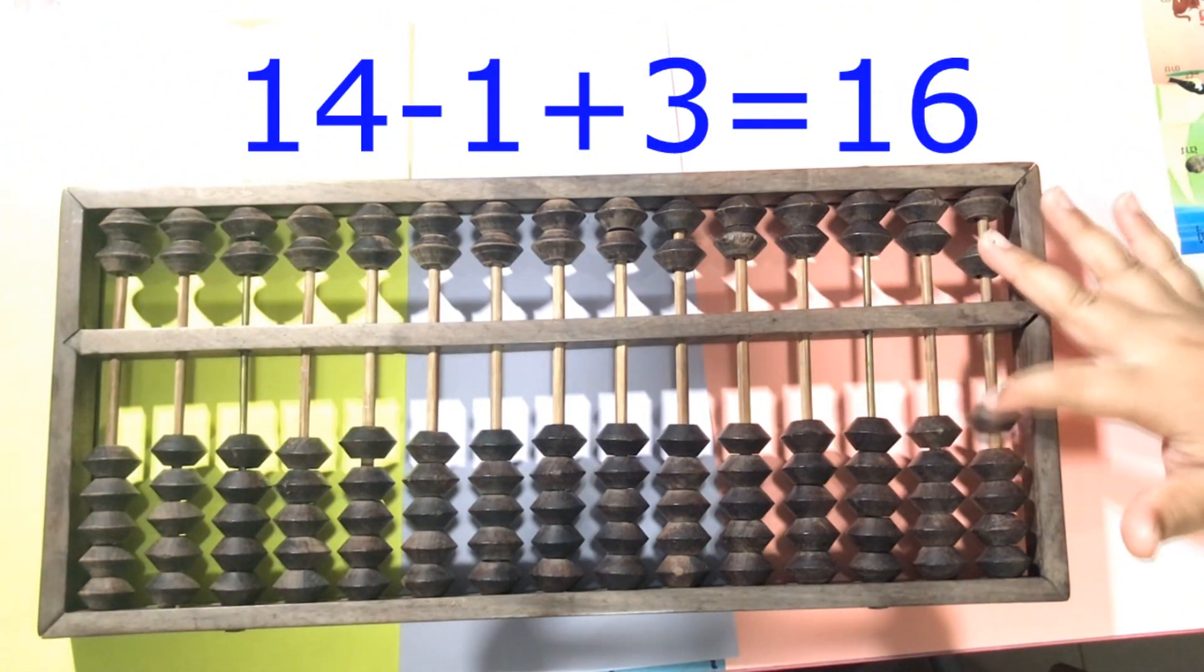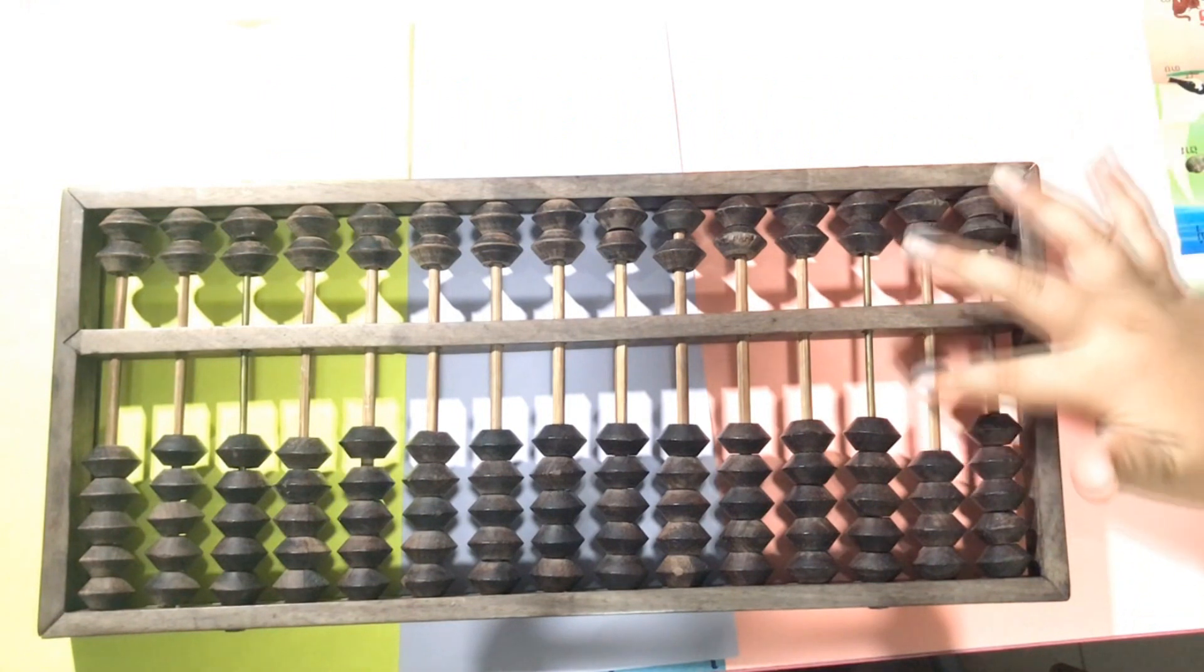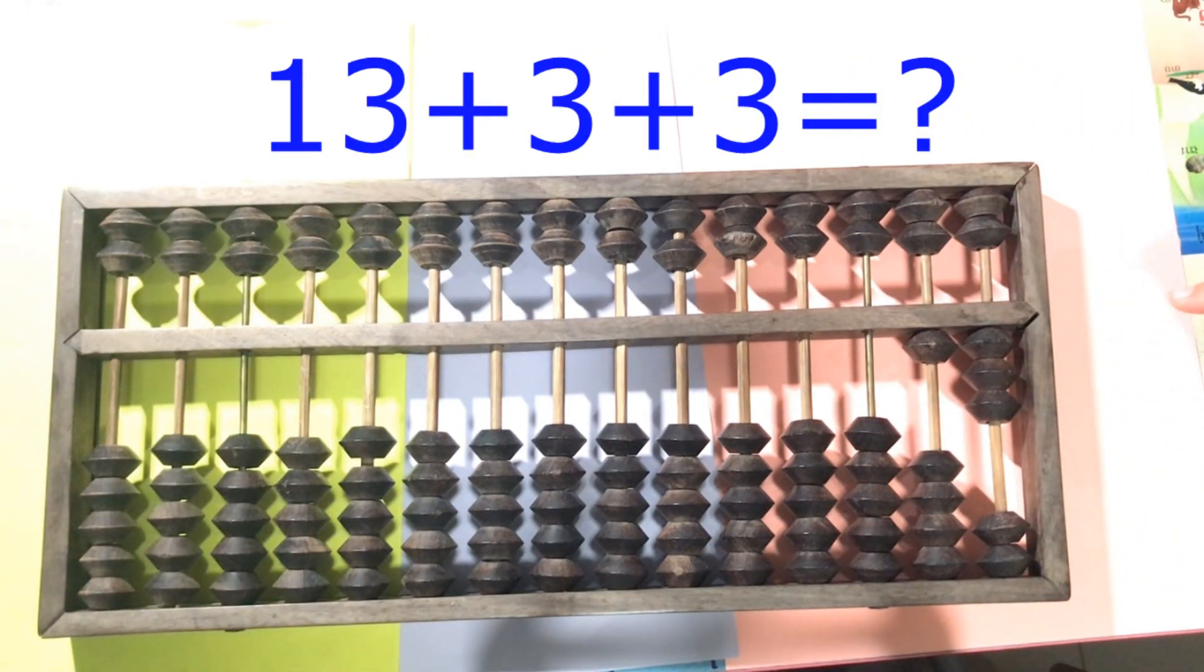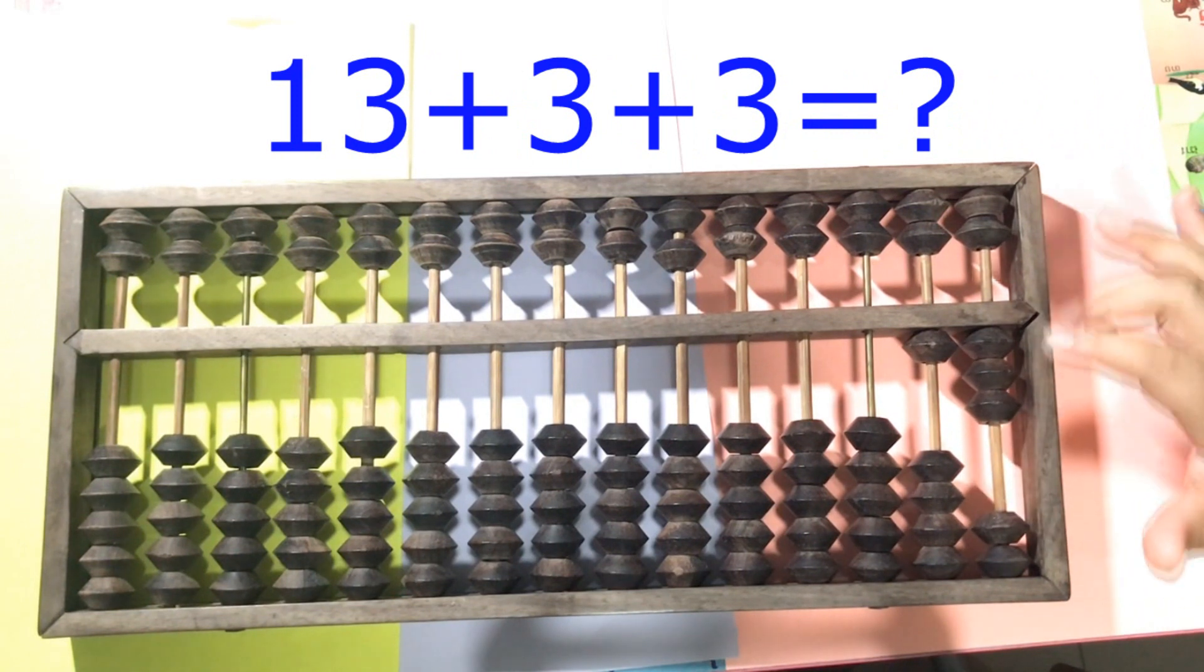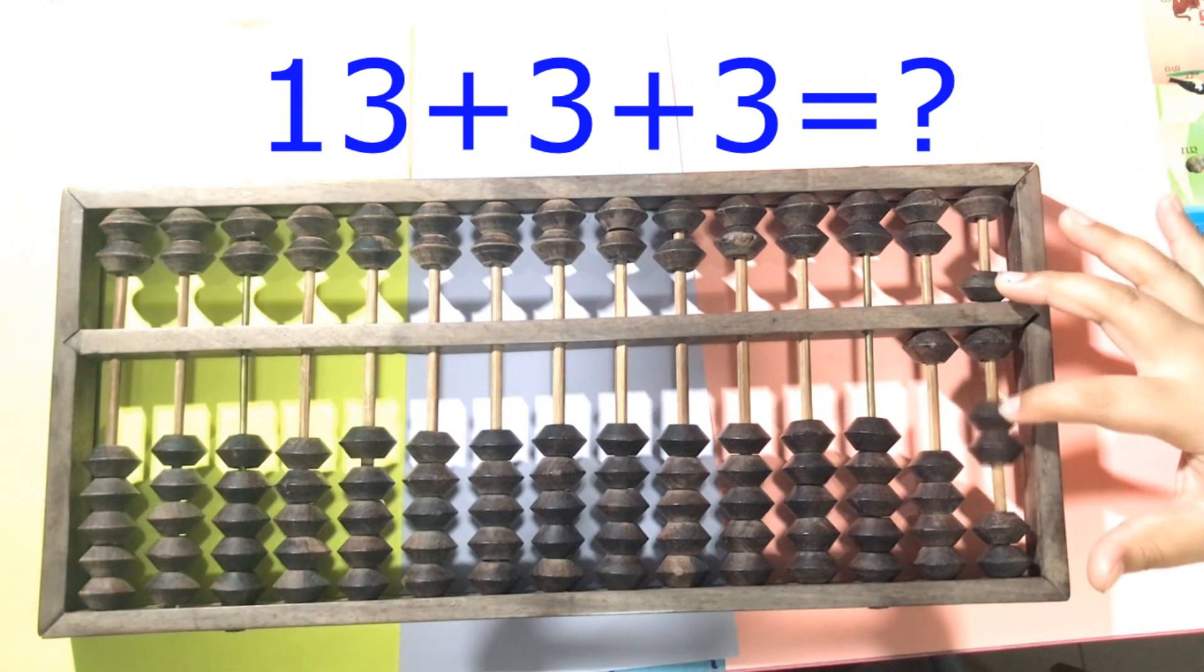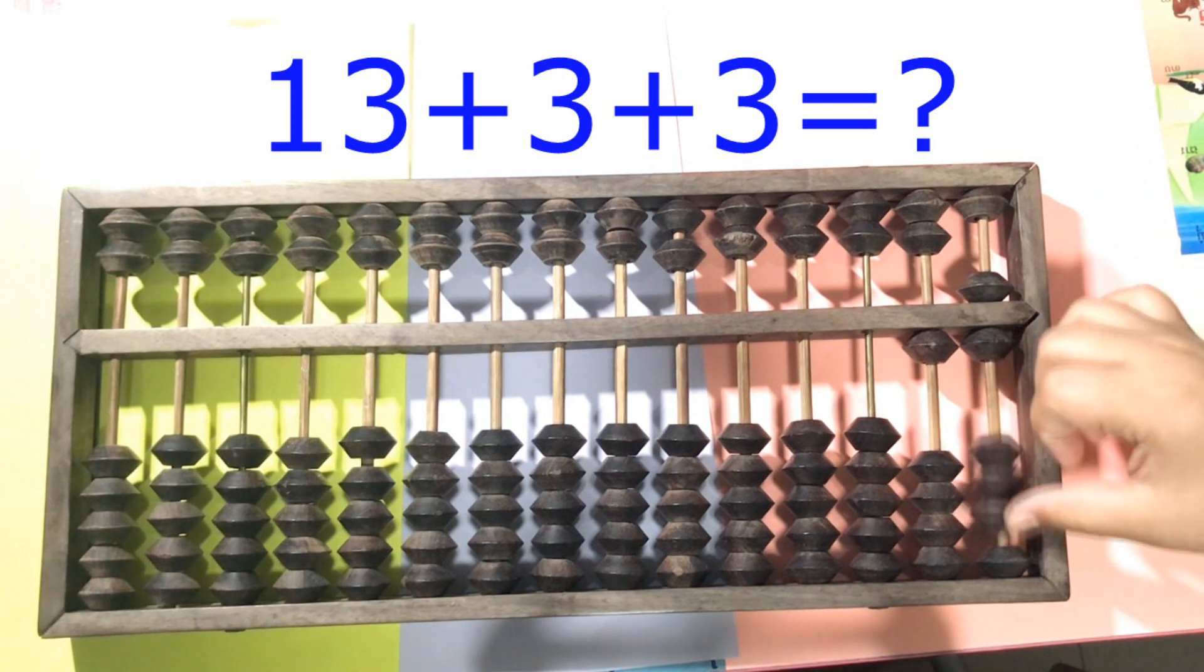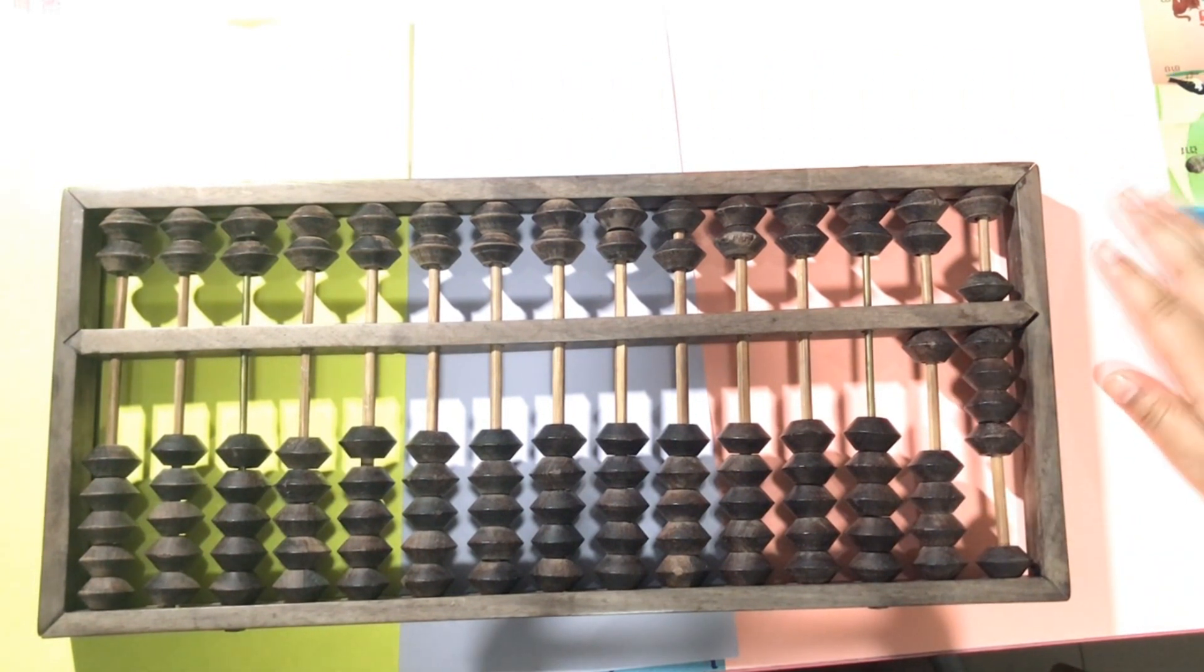The next one: 13 plus 3. We don't have 3 yet here. So again, we plus 5 and minus 2 and plus 3. The answer is 19.